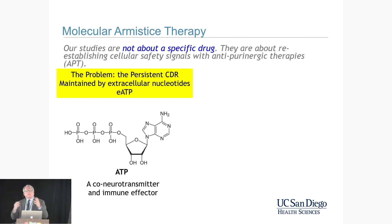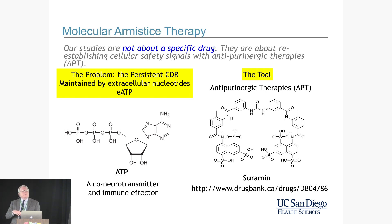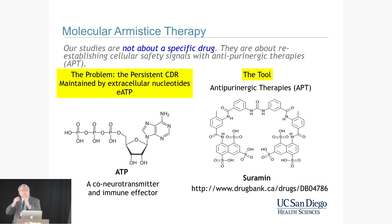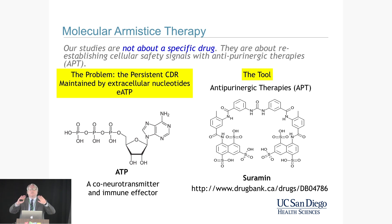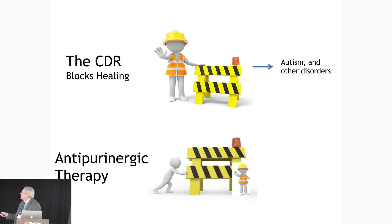If you come away thinking it's all about Suramin, then I haven't done my job correctly. We're really trying to introduce a new way of thinking about the causes and potential treatments for complex neurodevelopmental disorders like autism — disorders that on a fundamental basis have a persistent cell danger response that blocks healing, blocks recovery, blocks normal child development, and changes microbiome diversity. We think about this as armistice therapy: if we have a drug that can tell the cell the danger is over, the war is over, then maybe the cell can get back to the business of health. The CDR creates roadblocks, and therapies that remove those roadblocks can lead to improvement.